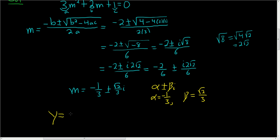So the final answer has the form y equals c1 e to the alpha x cosine beta x plus c2 e to the alpha x sine of beta x.